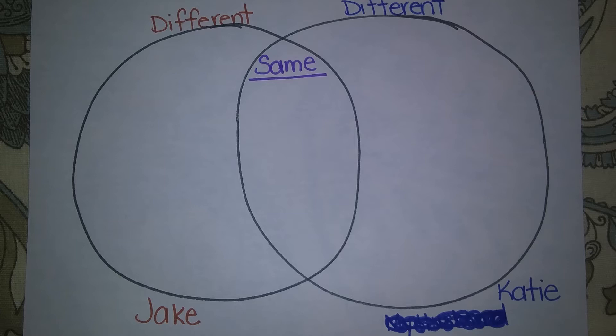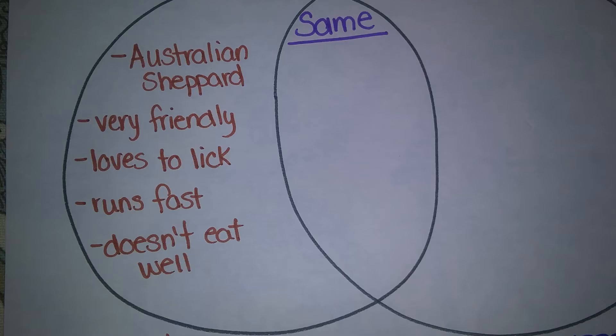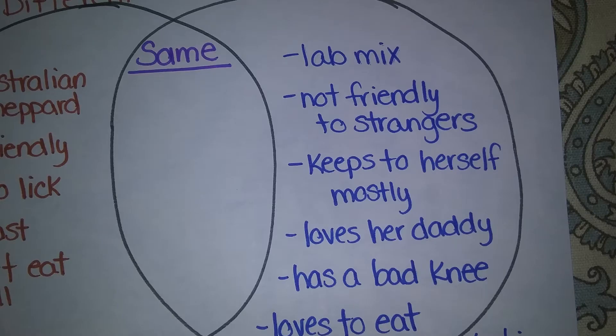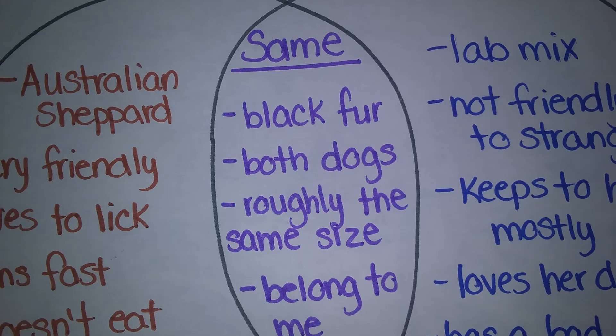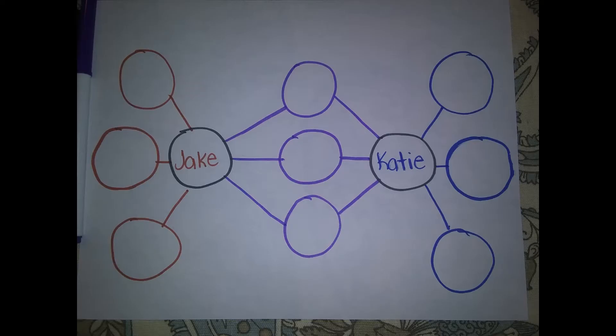I started with a Venn diagram. Each side shows what is unique about the two beings and the middle shows how they are the same. If you choose a double bubble map, it would look similar except everything would be in a bubble that connects to the two beings.